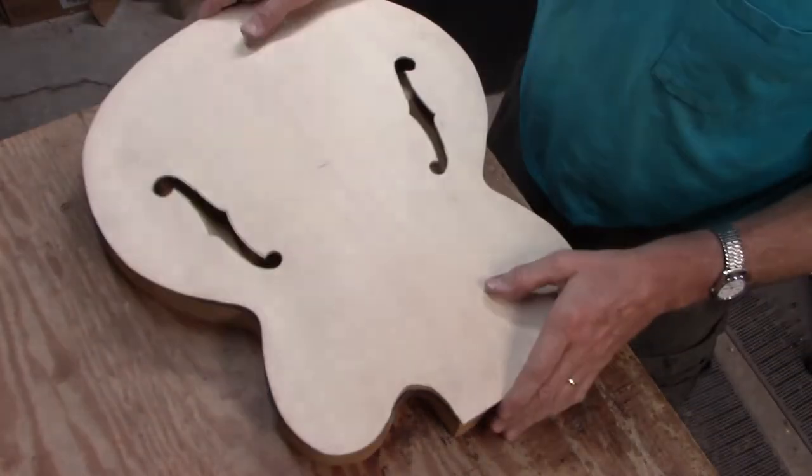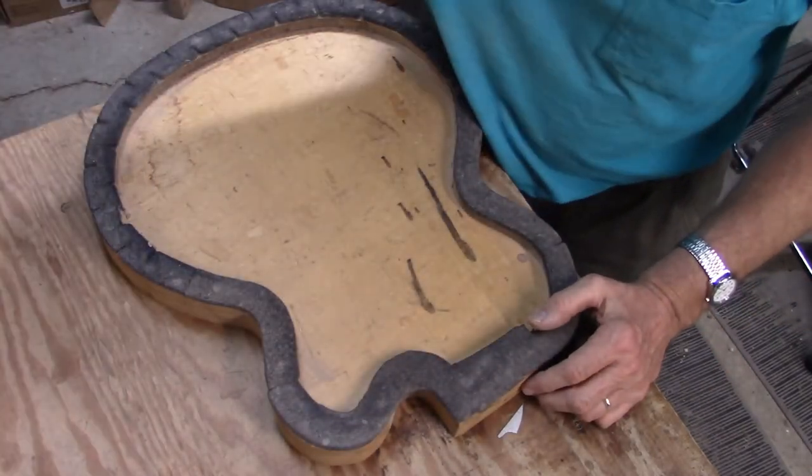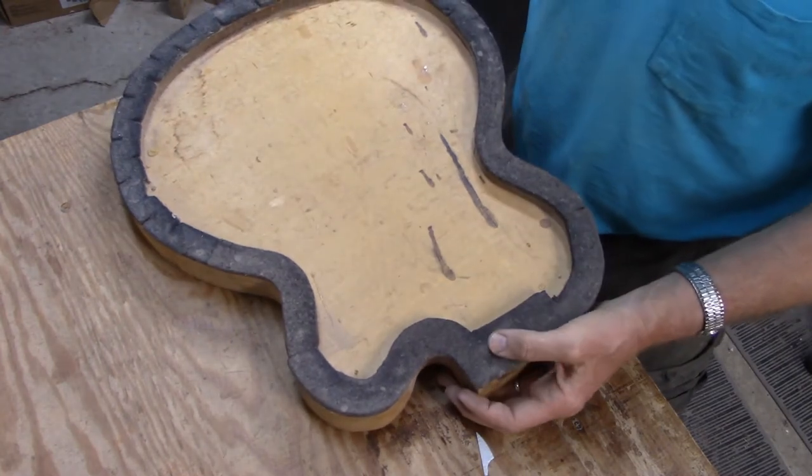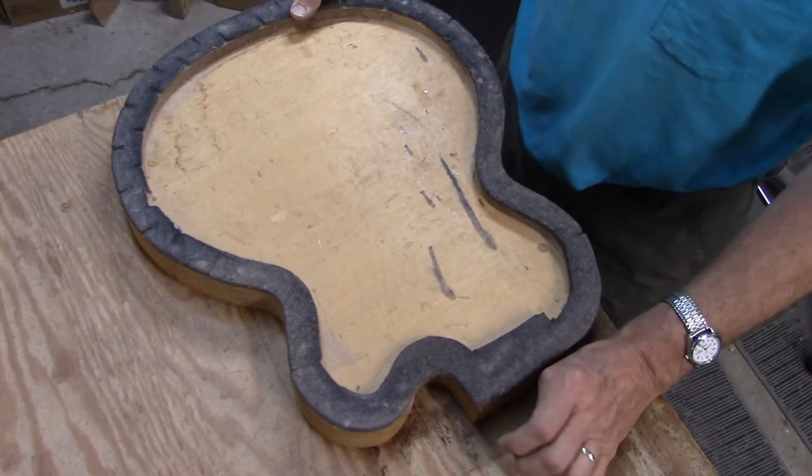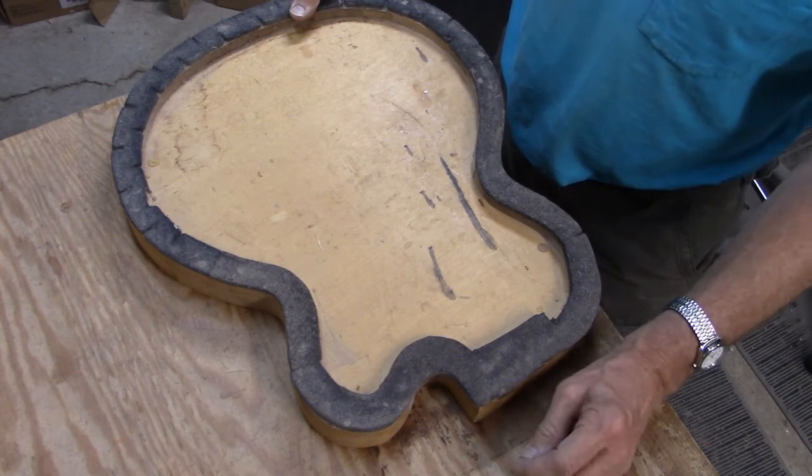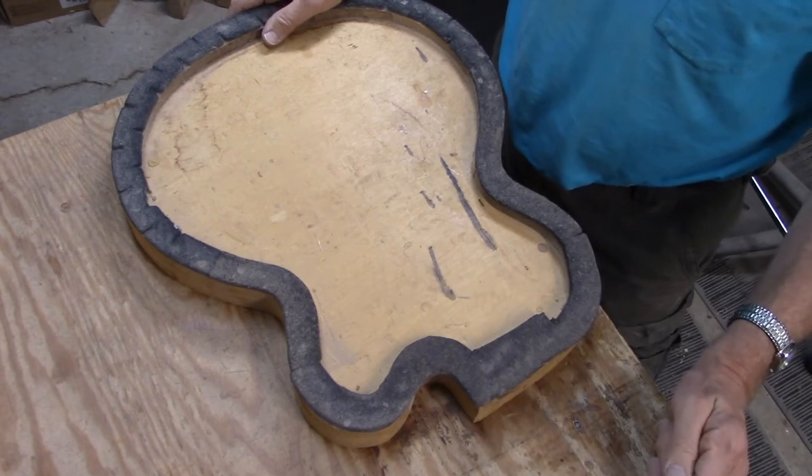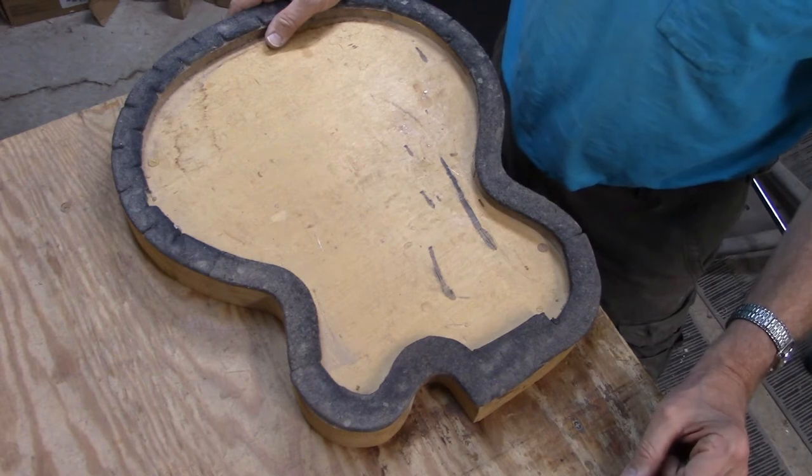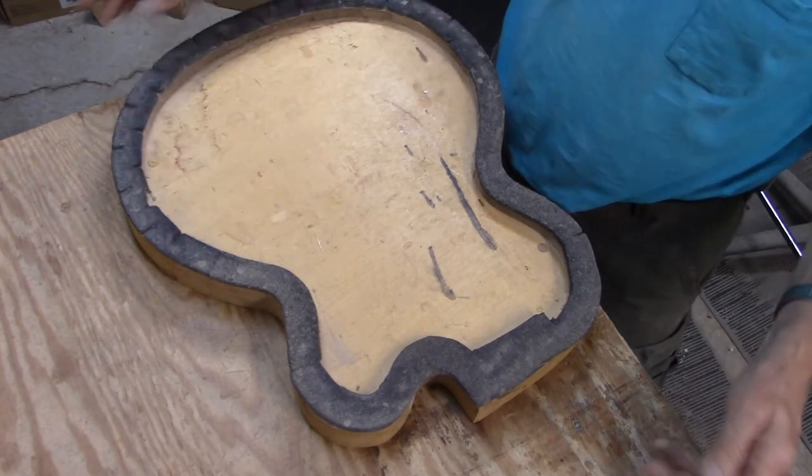So I've got my top on this workboard. But before I start working on it, just a little aside: this archtop assembly board came from the Gibson factory years ago when they moved out of Kalamazoo. Somehow Elderly Instruments in Lansing wound up with a lot of their tools and molds and templates. And then a few years after that, Elderly had an auction and I went to the auction and wound up with a bunch of templates for different electric guitar bodies, a couple of assembly molds for dreadnought guitars, and this really great workboard for archtops. So a little bit of history there.